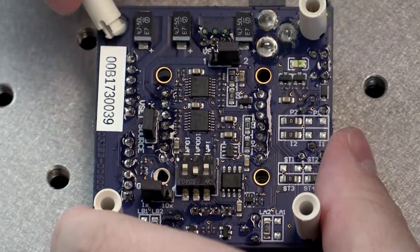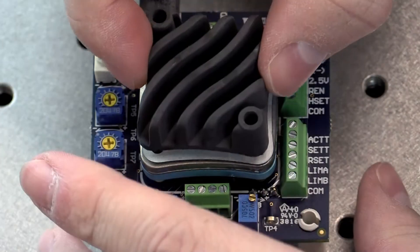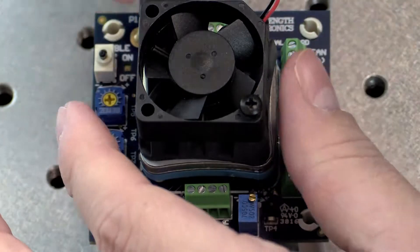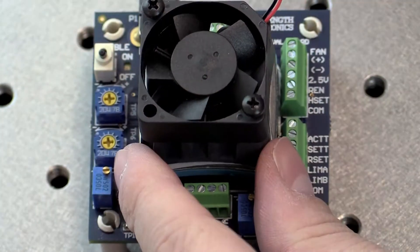Attach the snap-in standoffs. A heat sink and/or fan is mandatory when driving currents higher than 500 milliamps or operating above plus 5 volts.